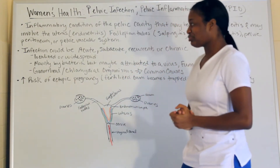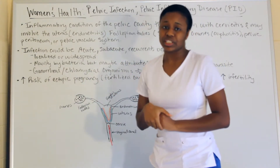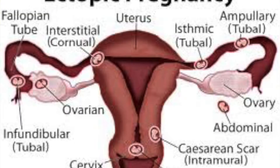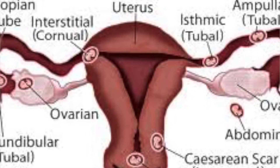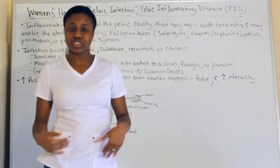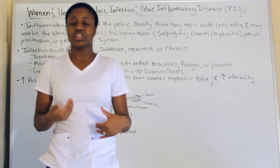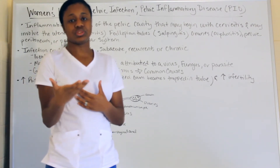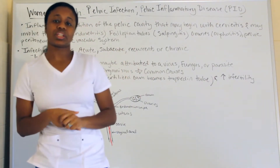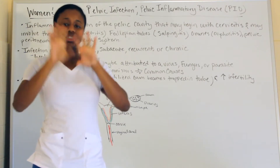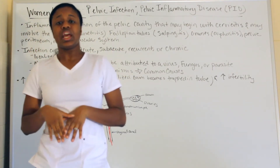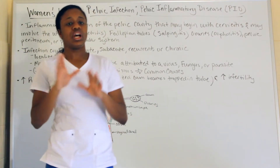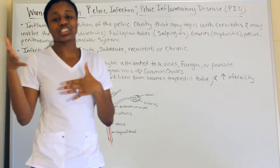PID increases the risk of ectopic pregnancy. An ectopic pregnancy is when a fertilized egg is implanted in the wrong area. Normally, the fertilized egg travels down the fallopian tube into the uterus to implant and grow. With an ectopic pregnancy, it could be implanted in the fallopian tube or elsewhere in the body other than the uterus.